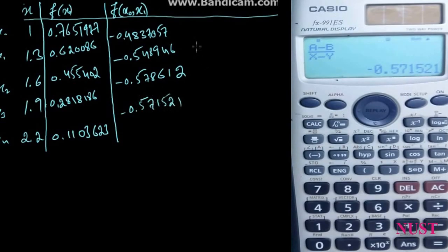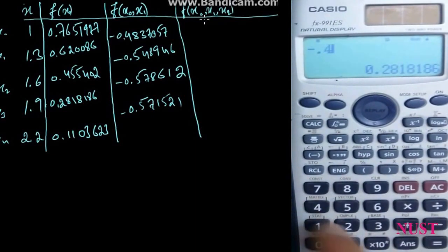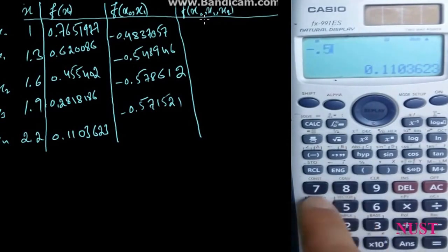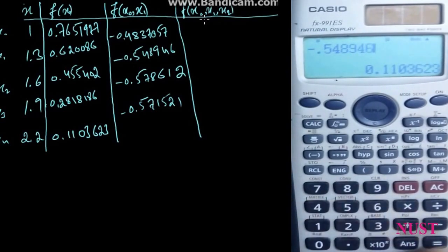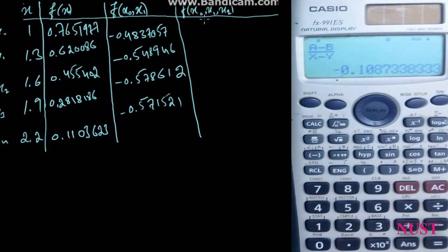Now to get the second divided difference, draw a line for one more column. Press Scale C, enter minus 0.4837057, and for B, minus 0.548946. For X enter 1.6. We get minus 0.1087339.